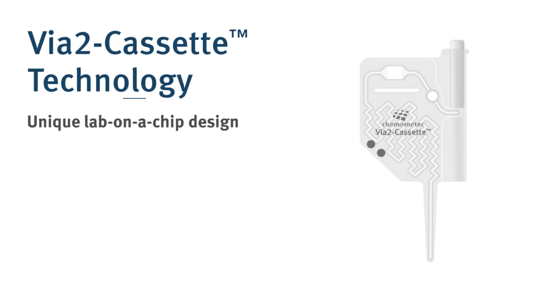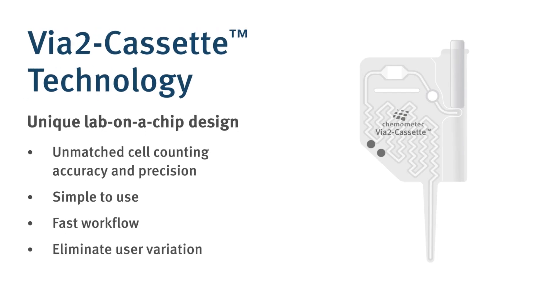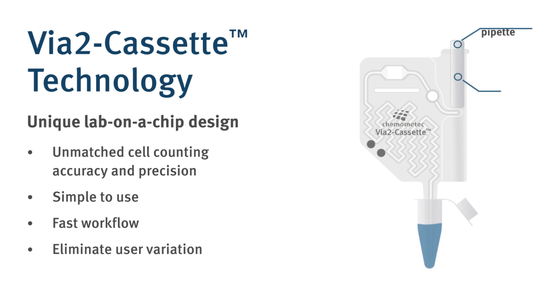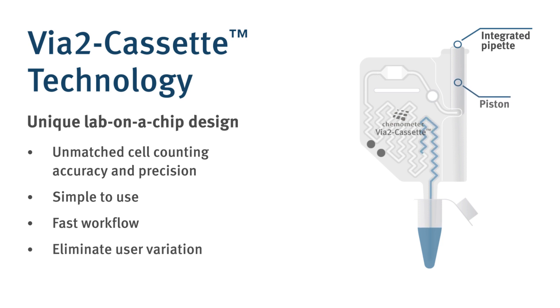Simple and fast workflow with the VIA2 cassette. Insert the VIA2 cassette tip into the sample. Aspirate the sample by pressing the integrated pipette.